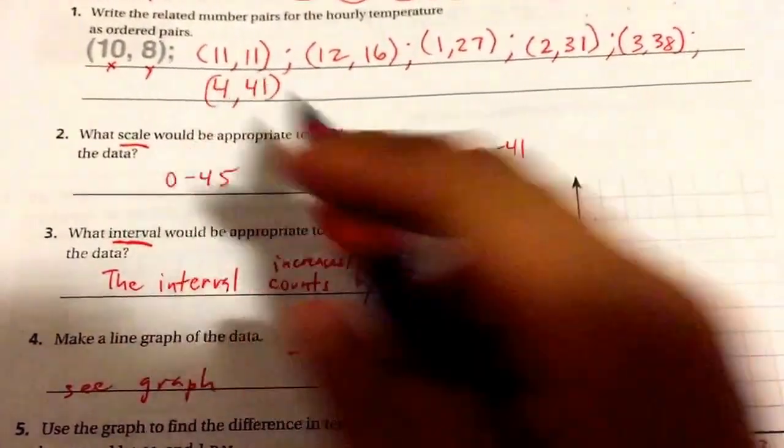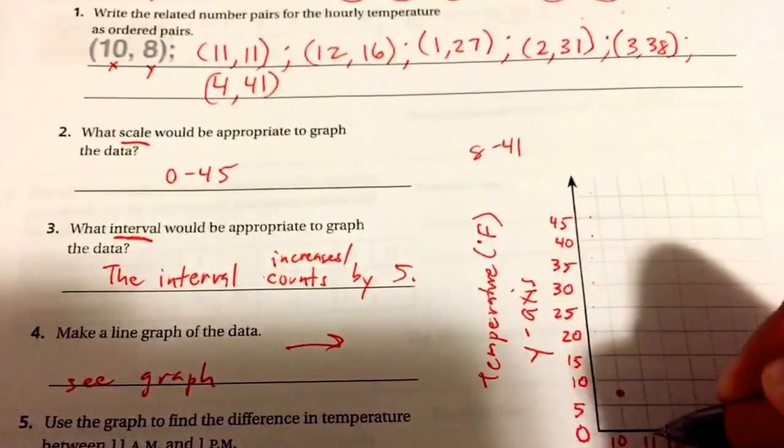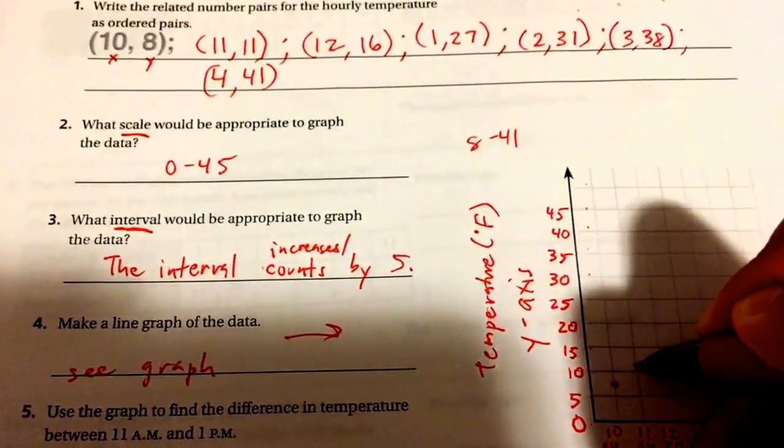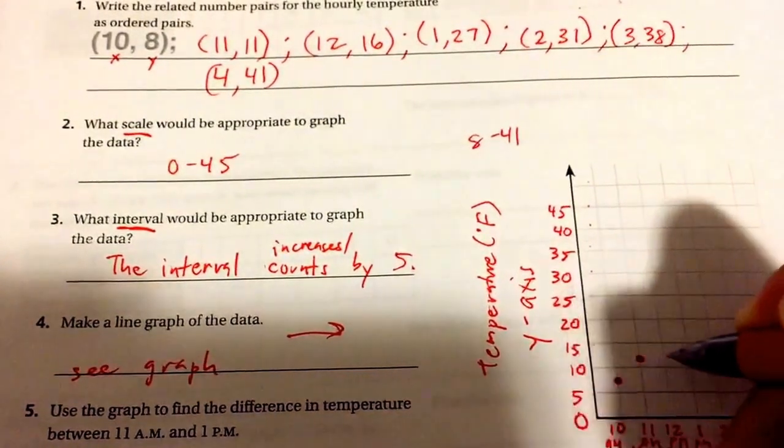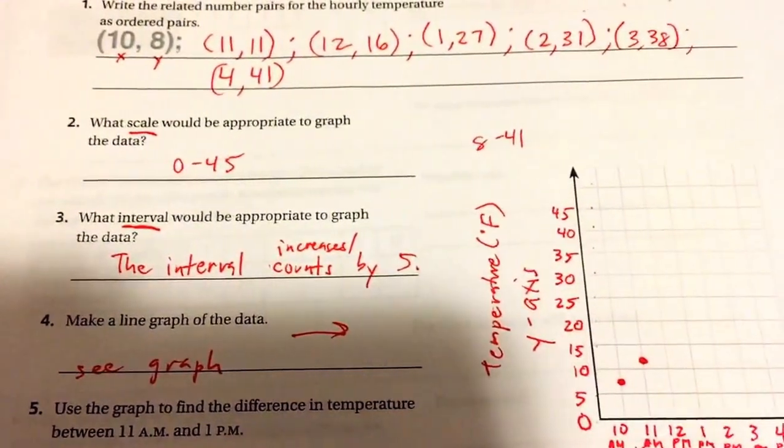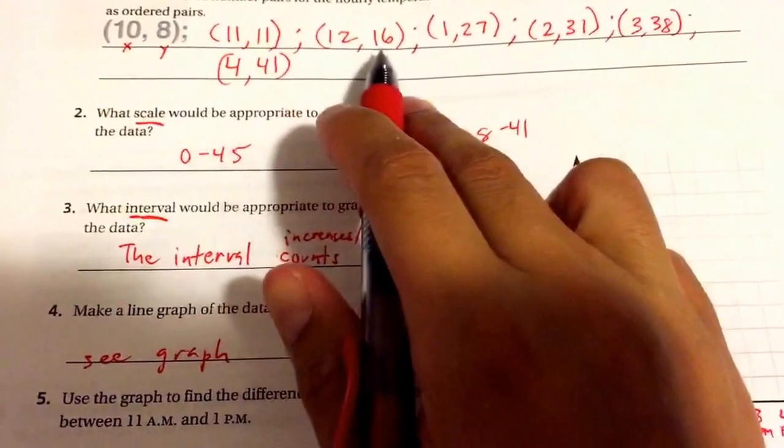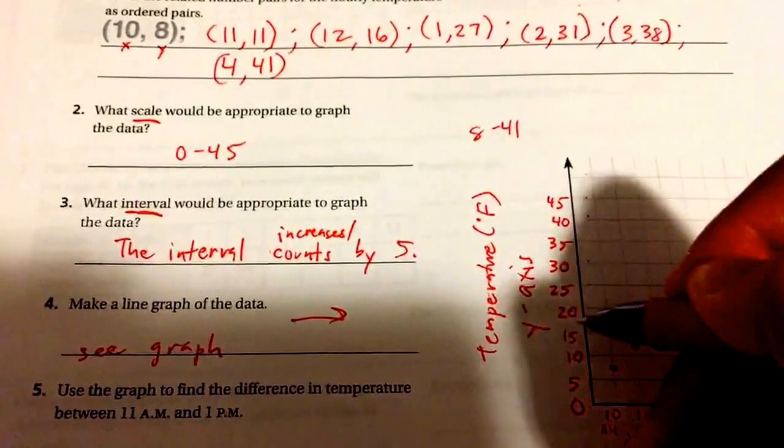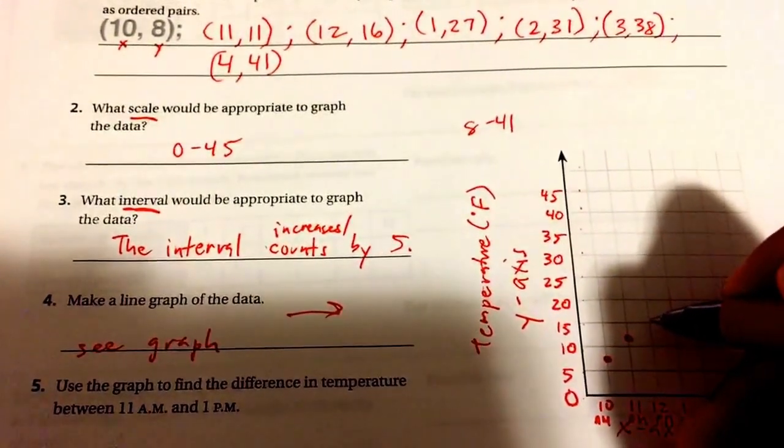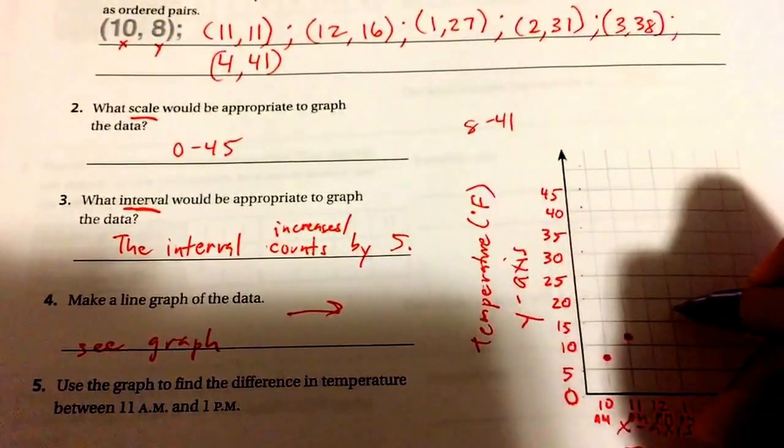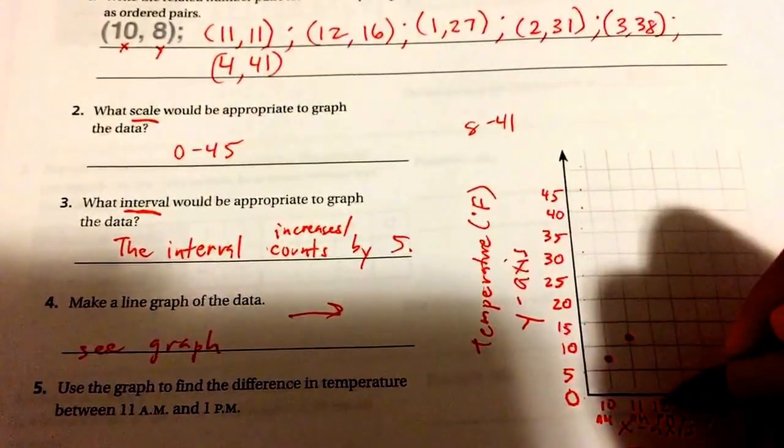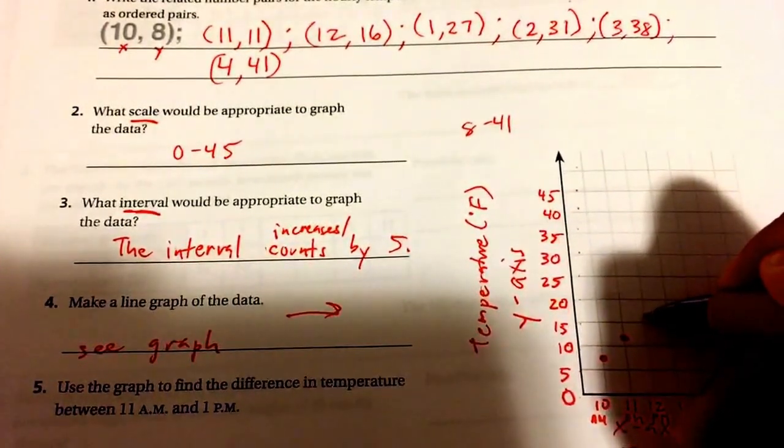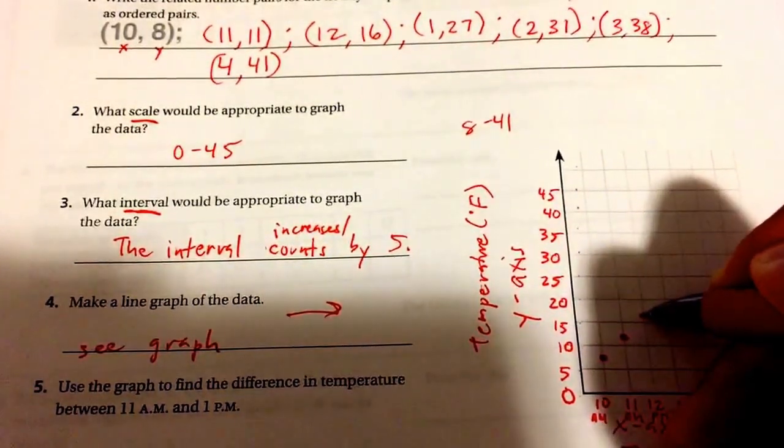The next one I'm going to graph is 11, 11. So I start on the right, 11, and I go up. And 11 is closer to the 10. It's not quite halfway. Then we do 12, 16. So we go to the 12 on the x-axis and 16 on the y-axis. 16 is in between 15 and 20. So it's in between these two lines. I'm at the 12. 12, 16. And 16 is closer to the 15 than it is the 20. It's not quite in the middle.